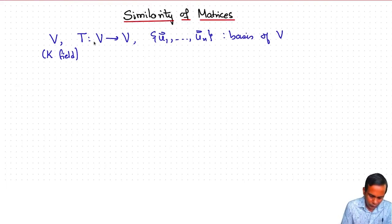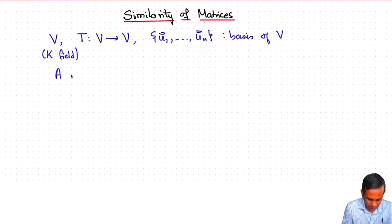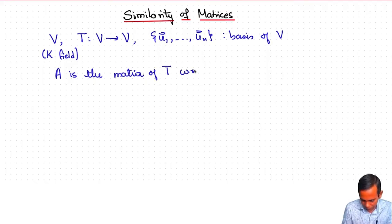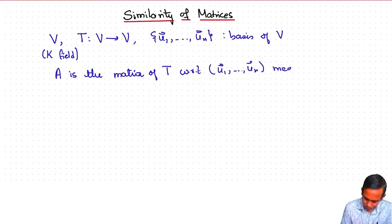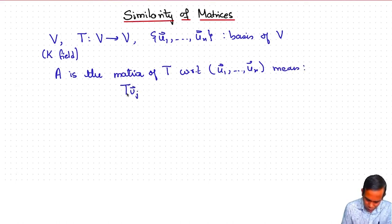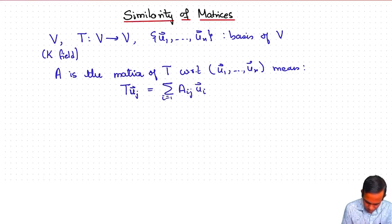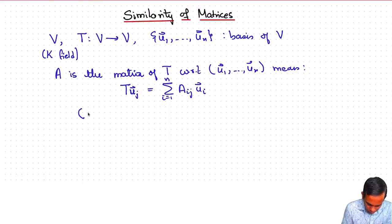Then we can write down the matrix of T with respect to the basis u1, u2, ..., un. So if A is the matrix of T with respect to u1, u2, ..., un, this means that T(uj) is given by the expansion: T(uj) = summation over i from 1 to n of a_ij * u_i. We can write this in a slightly more slick form by forming a row vector whose coordinates are the basis vectors u1, u2, ..., un.